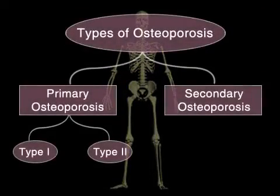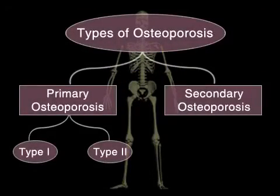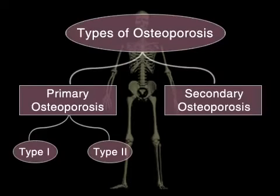There are two types of osteoporosis: primary and secondary osteoporosis. Primary osteoporosis is in turn divided into type 1 and type 2.